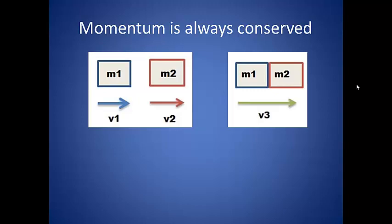We are looking at total momentum, so the initial momentum is the momentum of object A, which is mass times velocity of that object, plus the momentum of object B, which is the mass times velocity of that object.